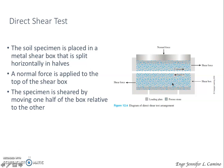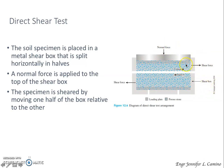The specimen size generally used is about 51 mm by 51 mm or 102 mm by 102 mm across, and about 25 mm high. The box is split horizontally into halves. A normal force is applied from the top of the shear box, and a shear force is applied by moving one half of the box relative to the other to cause failure in the soil specimen.